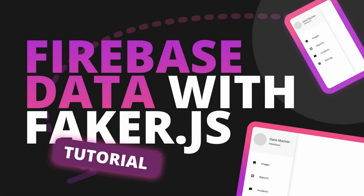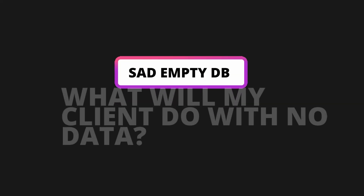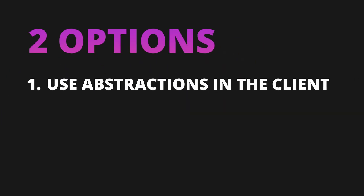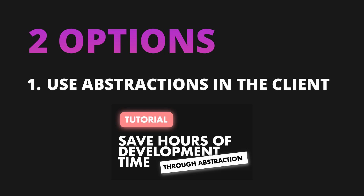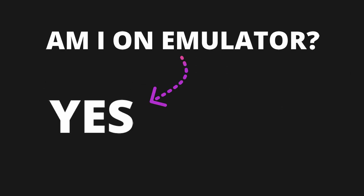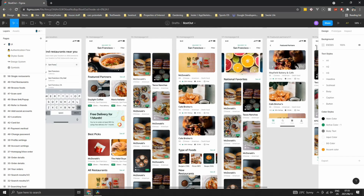When developing an application, you are usually dependent on the data you have available to interact with. When we are just starting out, we have no real data to depend on for development. There are two ways to handle this. Number one is to use abstraction in your client and provide the required data for demo purposes — a method shown in my abstraction tutorial. Number two is to populate your backend with fake data, which is what we are going to do in this tutorial. Here we check if we are running on the emulator and if we are, we pre-populate our database. In the following 10 minutes, you'll learn how to set up Firebase for local development using the Firebase emulator.